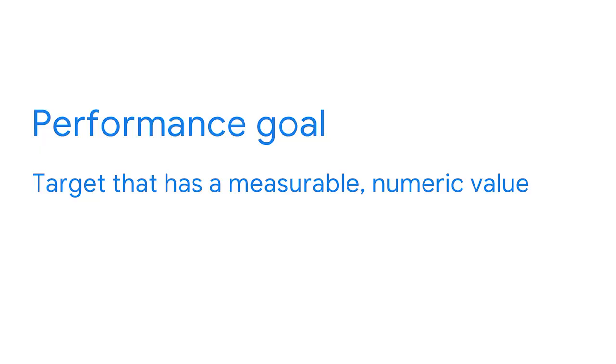The number of impressions is how many times an ad is displayed, and the number of clicks measures responses. These are examples of performance goals. A performance goal is a target that has a measurable numeric value. Performance goals can apply to marketing goals or specific campaigns in a media plan. When performance goals apply to marketing goals, they are sometimes called marketing objectives.